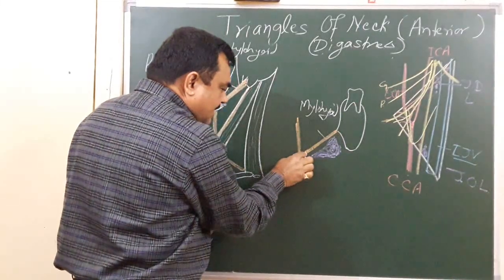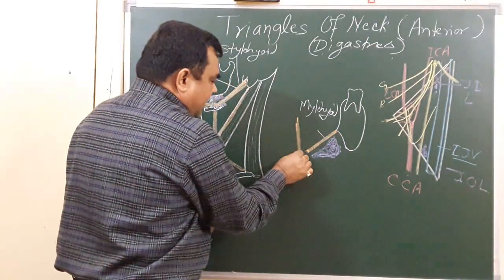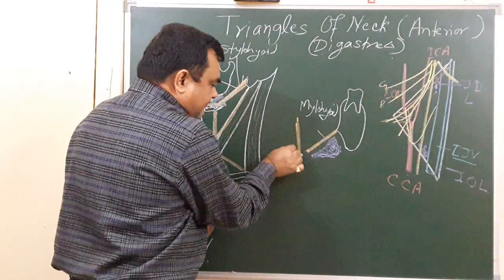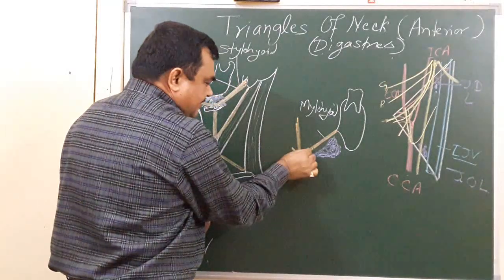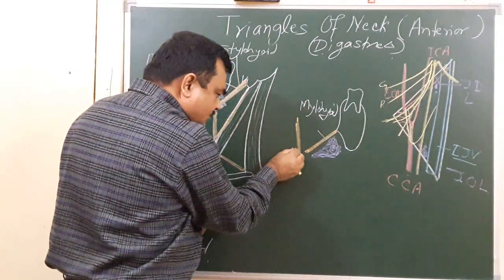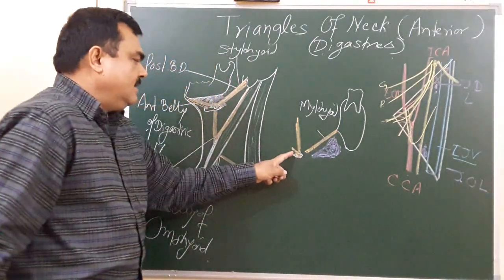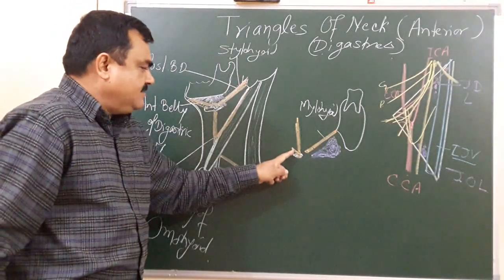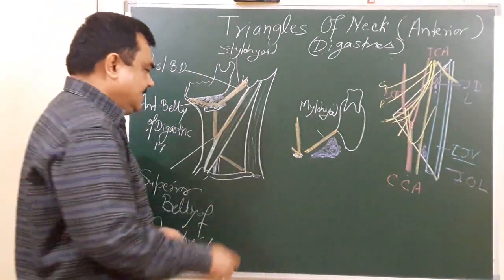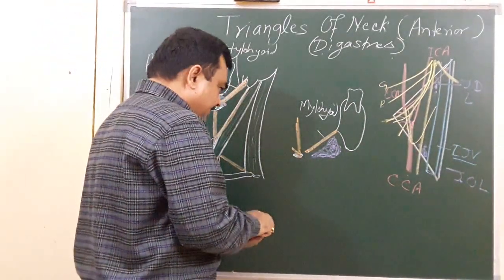The superior pharyngeal constrictor also takes part in forming the floor. And here is also the middle constrictor of the pharynx, which also contributes to forming the floor of this triangle. This is the middle constrictor of the pharynx.